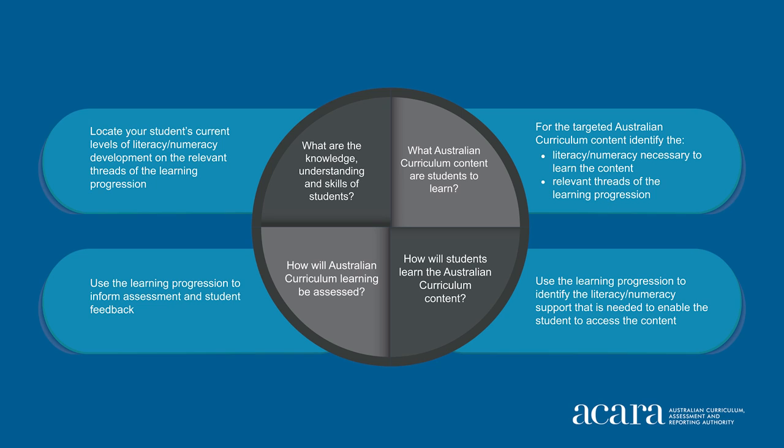It's important to note that the learning area content and achievement standards continue to be your focus for planning, programming, teaching, learning, and assessment in relation to the Australian Curriculum. The learning progressions don't tell you what to teach. The progressions provide a detailed map of how students become increasingly sophisticated in particular aspects or threads of literacy and numeracy development. The four outer boxes of the diagram outline how you may use the literacy and numeracy learning progressions in relation to each phase.